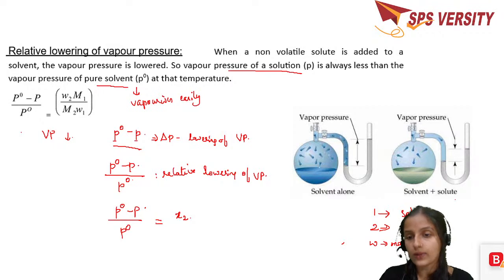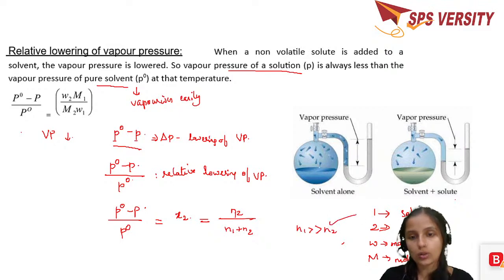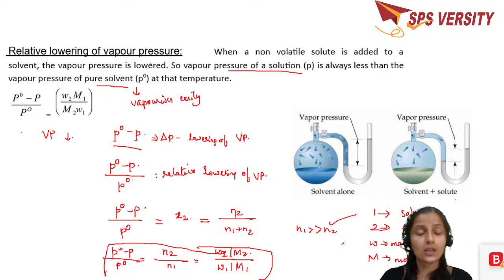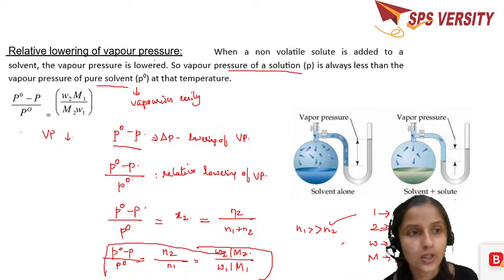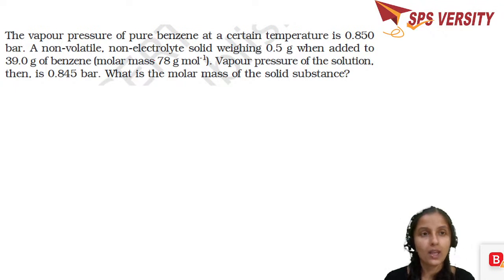The final expression becomes: (P0 − P) / P0 = w2·M1 / (w1·M2), where subscript 1 refers to the solvent and subscript 2 refers to the solute, w is mass, and M is molar mass. Among sea water and pure water, pure water has higher vapor pressure because in sea water there are interactions between the water and the dissolved salt content, lowering the vapor pressure.